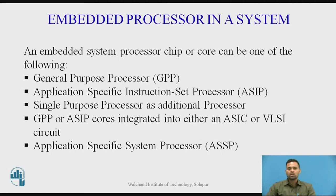GPP or ASIP cores can be integrated into either an ASIC or VLSI chip. So general purpose processors or application specific instruction set processors can be integrated into a VLSI chip or ASIC chip. The last type is the application specific system processor, where a particular processor is designed based on the application. These are the embedded system processor chips or cores used in an embedded system.